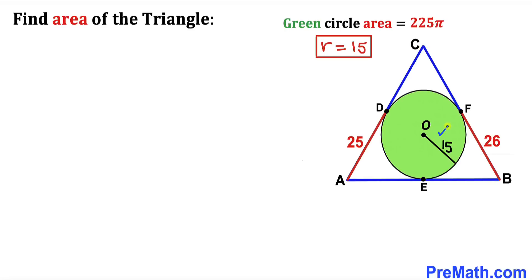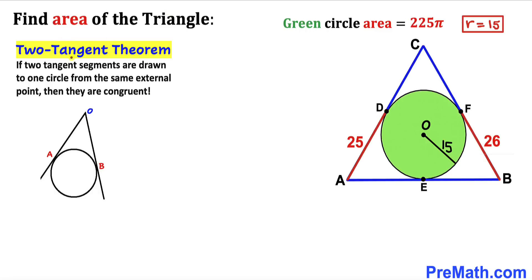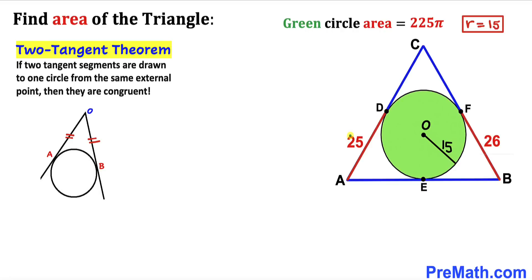Now let's recall the two tangent theorem: if two tangent segments are drawn to a circle from the same external point, they are congruent. In our diagram, segment AD equals segment AE, so since AD is 25, AE is 25 units as well. Similarly, segment BF equals segment BE, so since BF is 26, BE is 26 units as well.